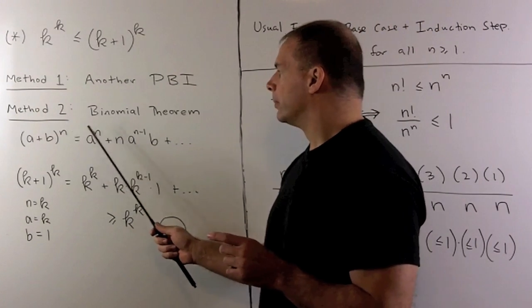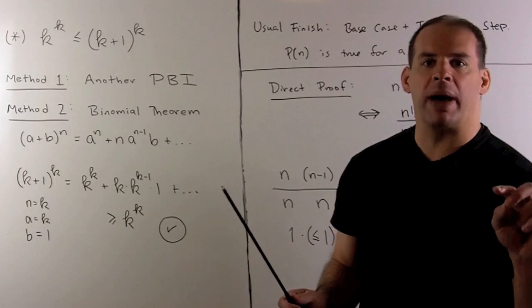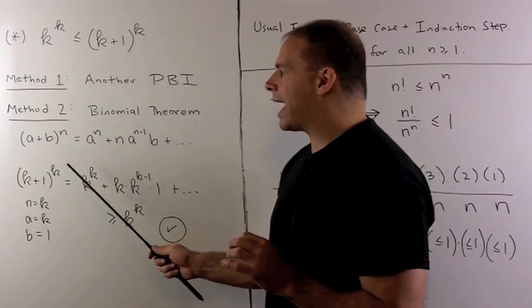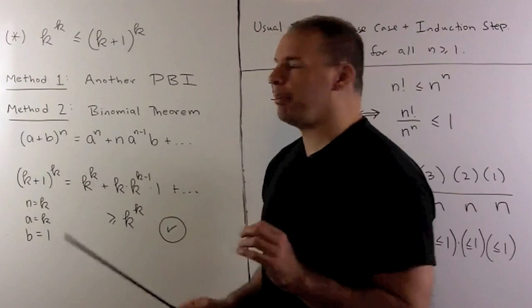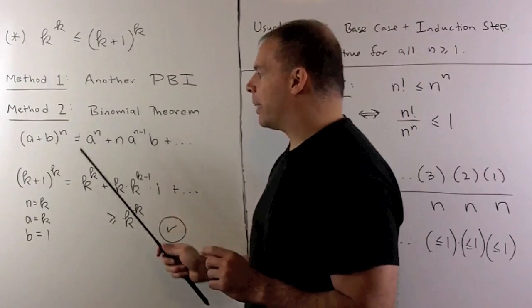For our second method, we can use the binomial theorem. I only need the first part of the binomial theorem. So what we have is, in our case, we have a, b, and n positive integers. I take a plus b to the nth power.